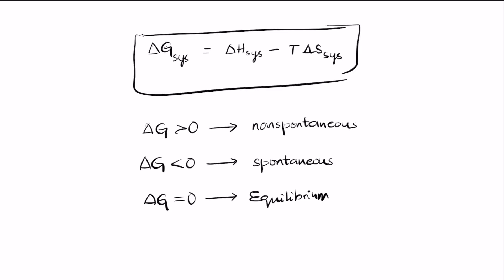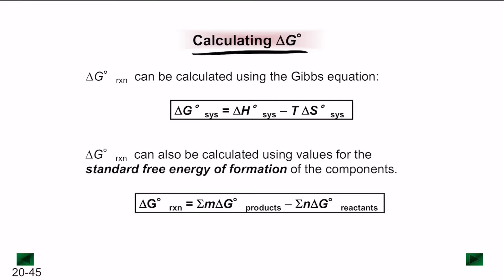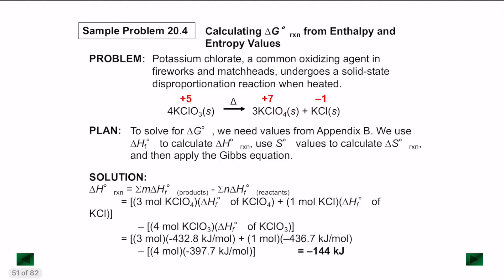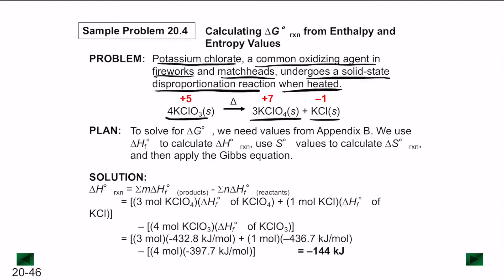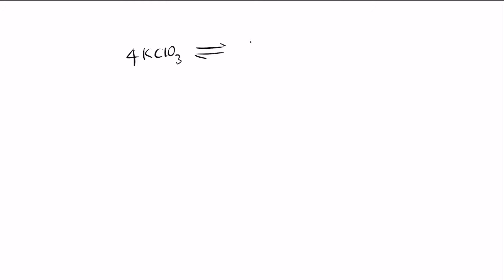Delta G of a reaction can be calculated using the Gibbs equation, computing delta H and delta S of the system, or directly using standard free energy of formation: delta G of the reaction equals delta G of the products minus delta G of the reactants. For example, potassium chlorate, a common oxidizing agent in fireworks and match heads, undergoes a solid-state disproportionation reaction: 4KClO3 gives 3KClO4 plus KCl.